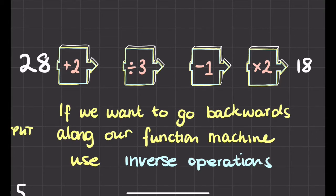So let's just quickly check that, make sure we haven't made any mistakes. So 28 plus 2 is 30, 30 divided by 3 is 10, 10 take away 1 is 9, and 9 times 2 is indeed 18. So we did that right and that worked lovely. So if we want to go backwards along our function machine we need to use our inverse operations, like the opposite.